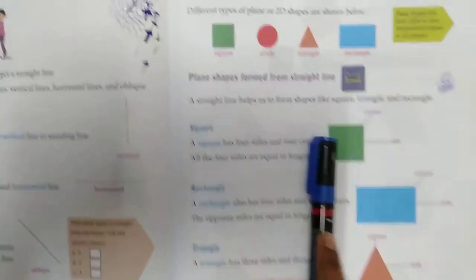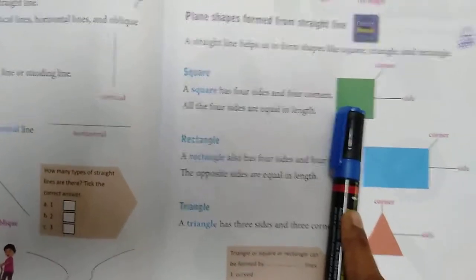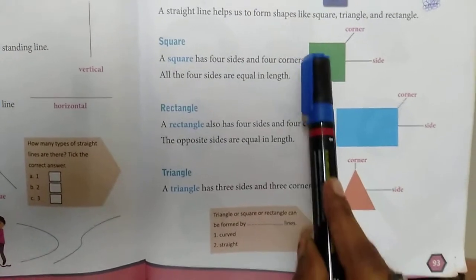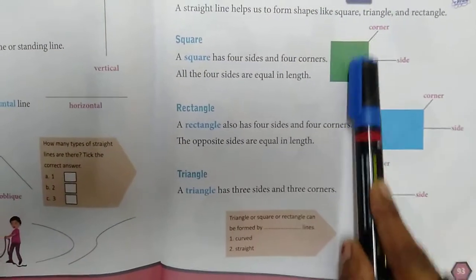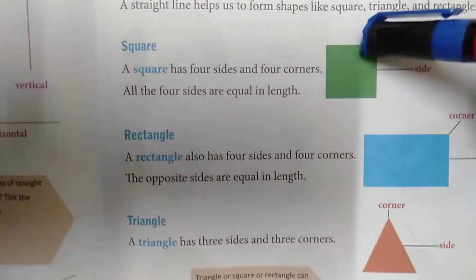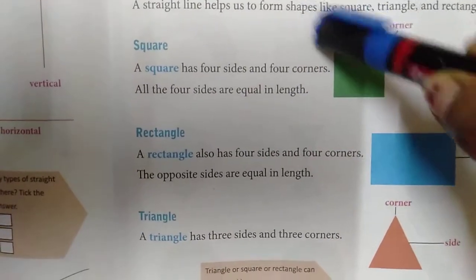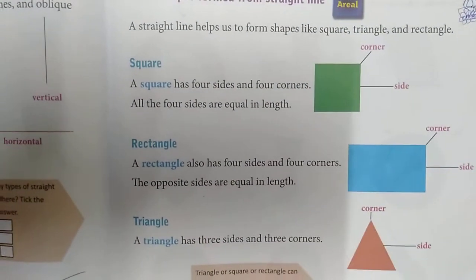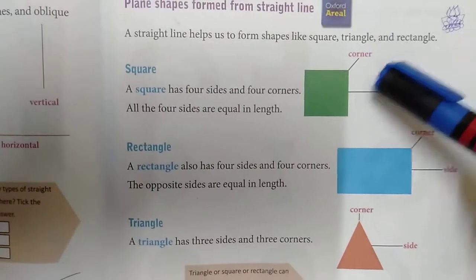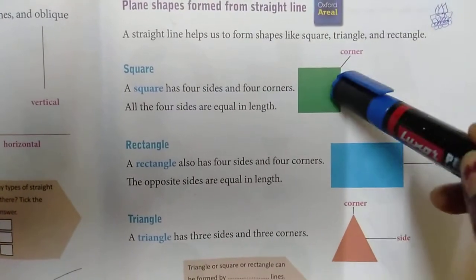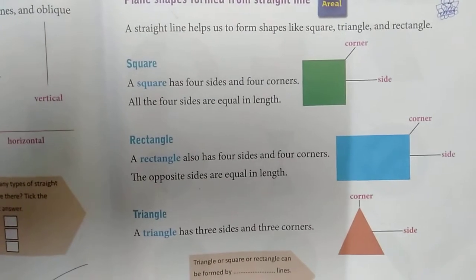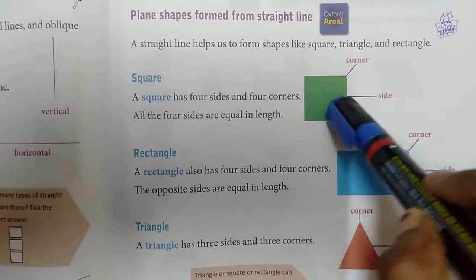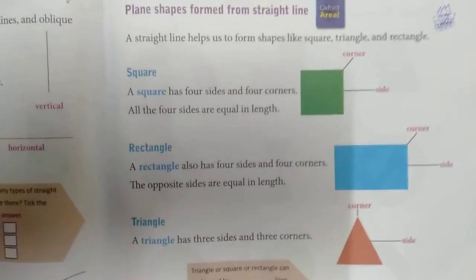See here — this is a square. A square has how many sides? One, two, three, four — four sides. And how many corners? One, two, three, four — four corners. In a square, all four sides are equal in length. Four sides and four corners, and all the sides are equal. This is called a square.